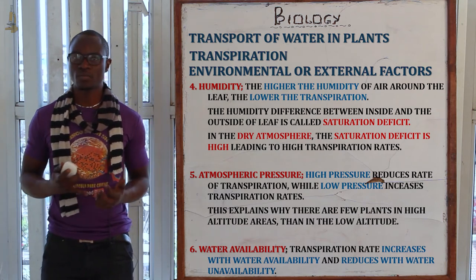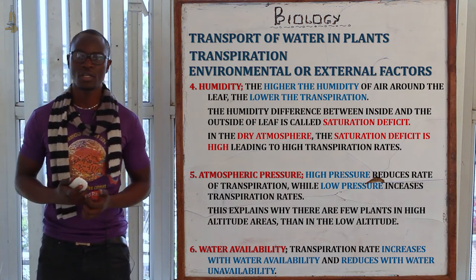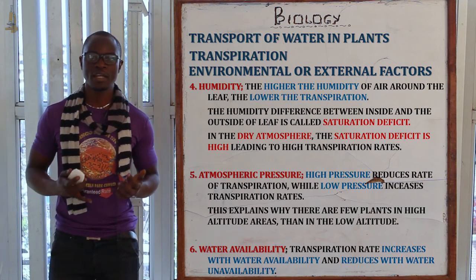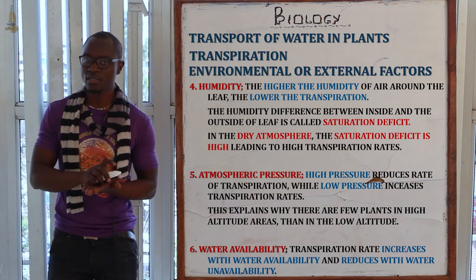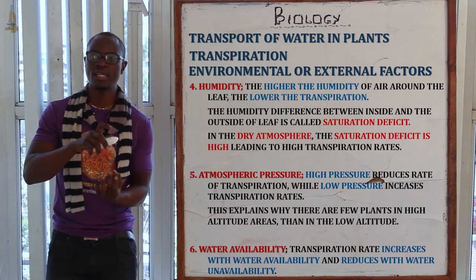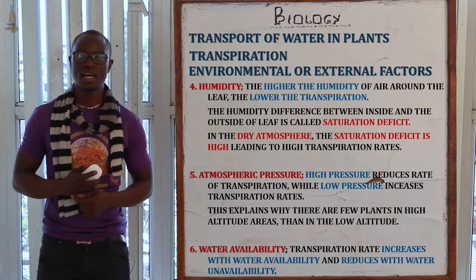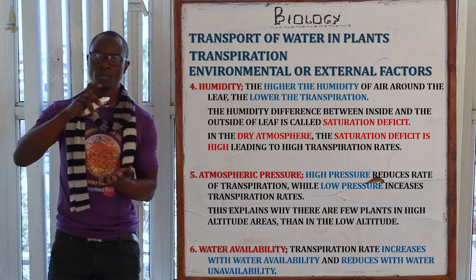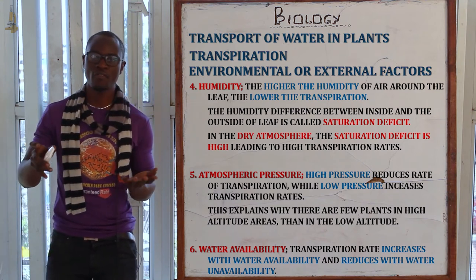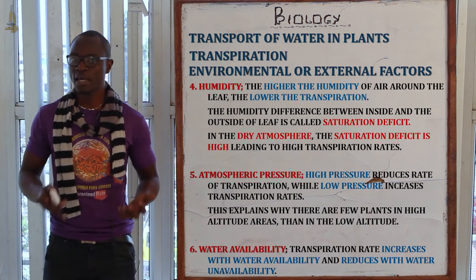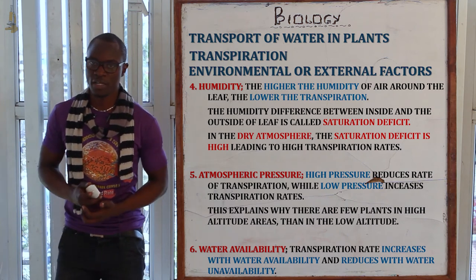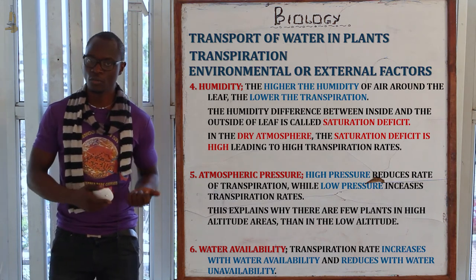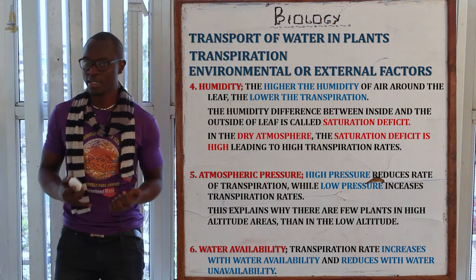Regarding atmospheric pressure, high pressure reduces the rate of transpiration while low pressure increases it. High pressure presses against the stomata, preventing water vapor from leaving the leaf. When pressure is low, water vapor can more easily exit the leaf, accelerating transpiration. As for water availability, if the availability of water is high the transpiration rate will be high, and if water is low then the transpiration rate will be low as well.